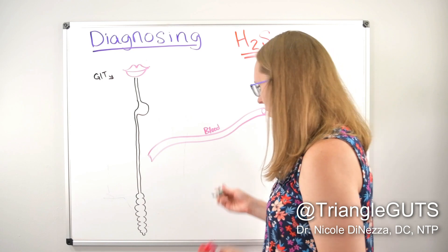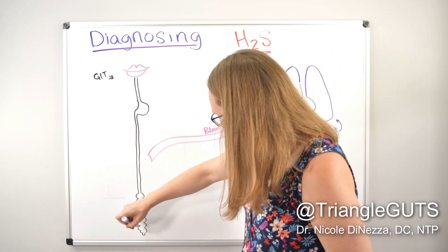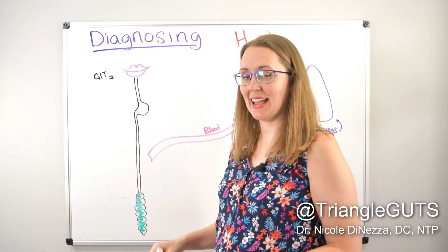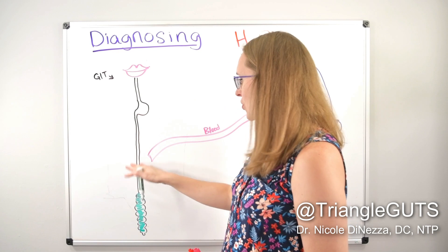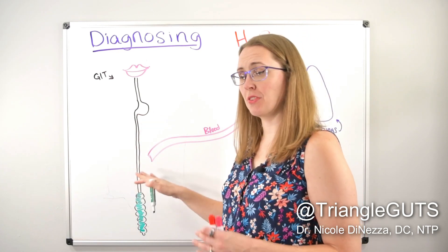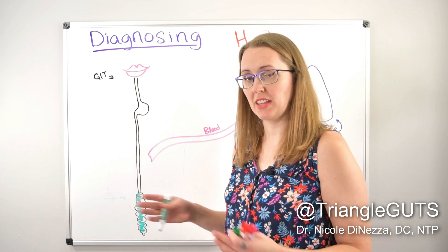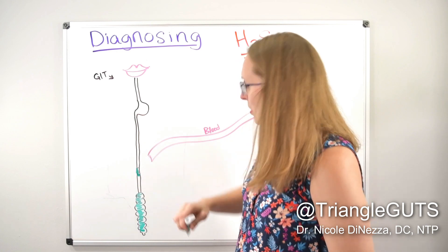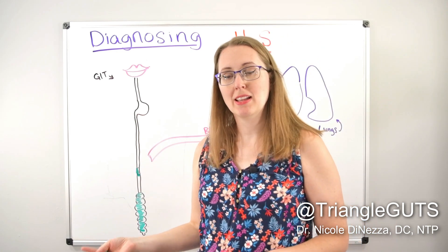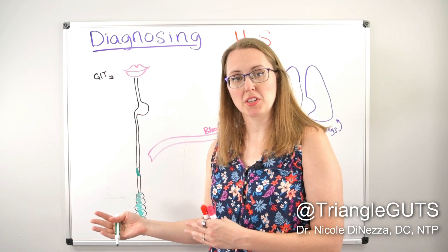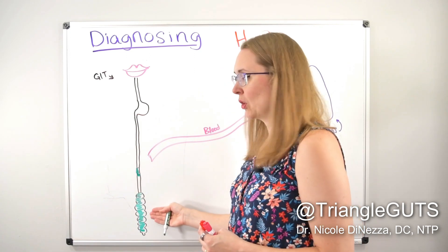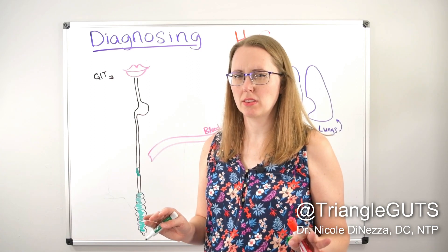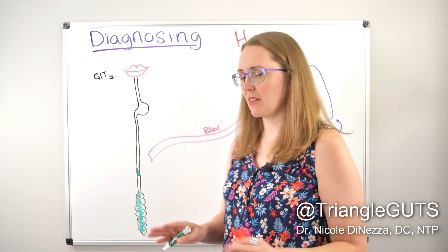The idea with SIBO is that you would have an overgrowth of bacteria. Normally you have a lot of bacteria in your colon, also known as the large intestine, but you don't have quite as many in the small bowel. And if you do, they're not from the same families or phyla. The idea with SIBO is that somewhere along this tube, you have a pocket or an overgrowth of bacteria that is more than you would expect, and it looks more similar to that of the colon.